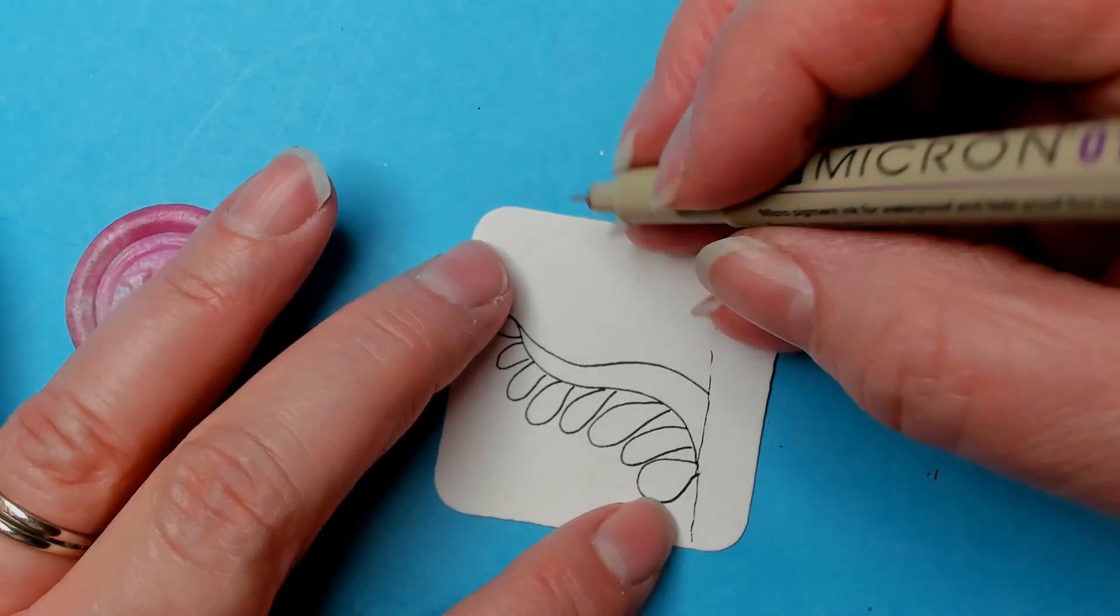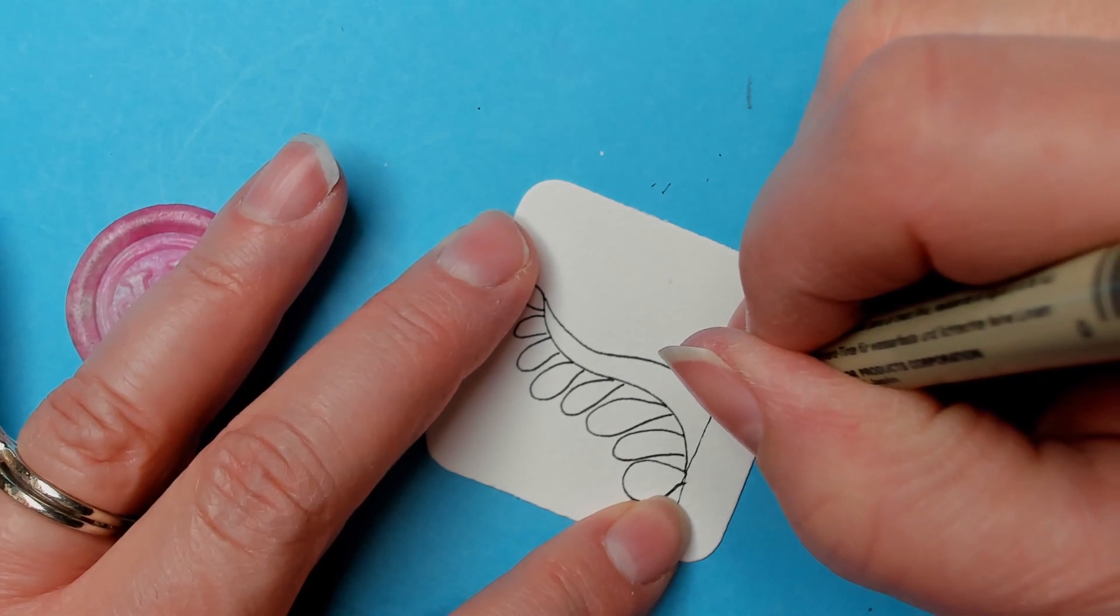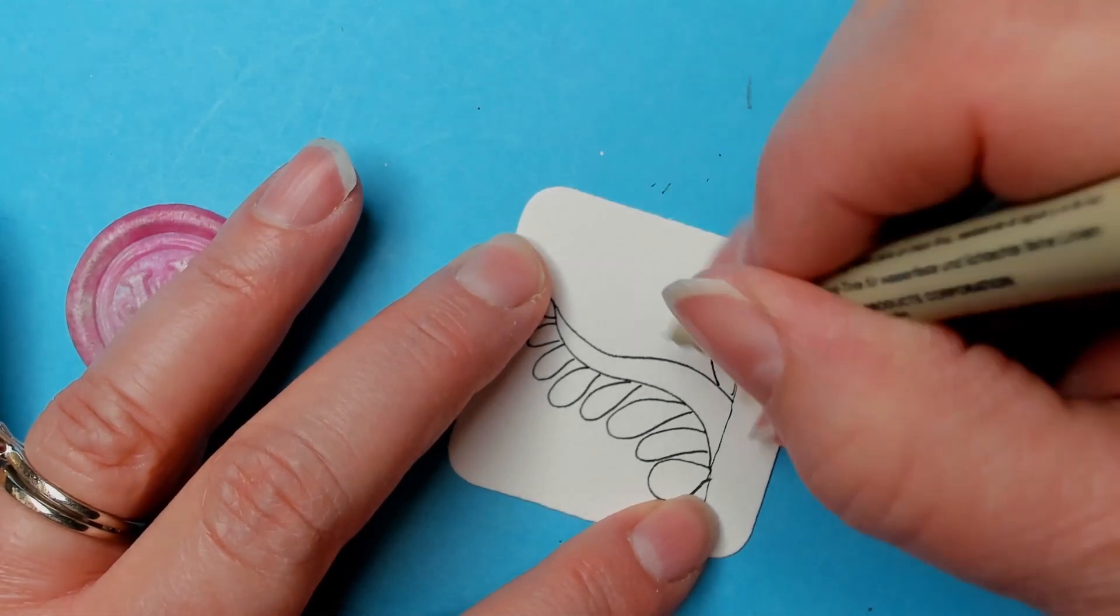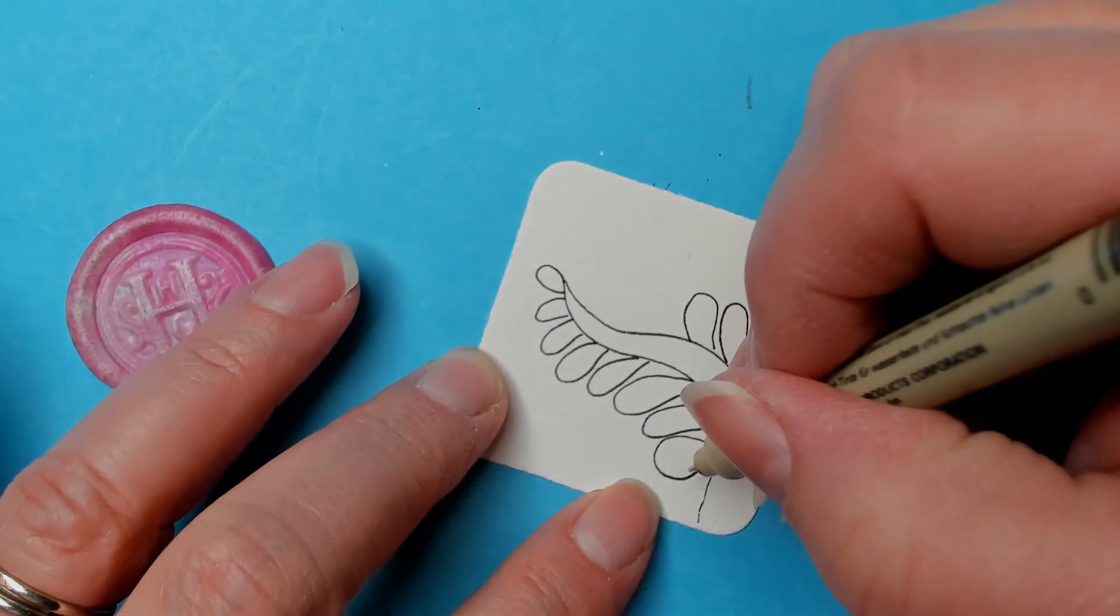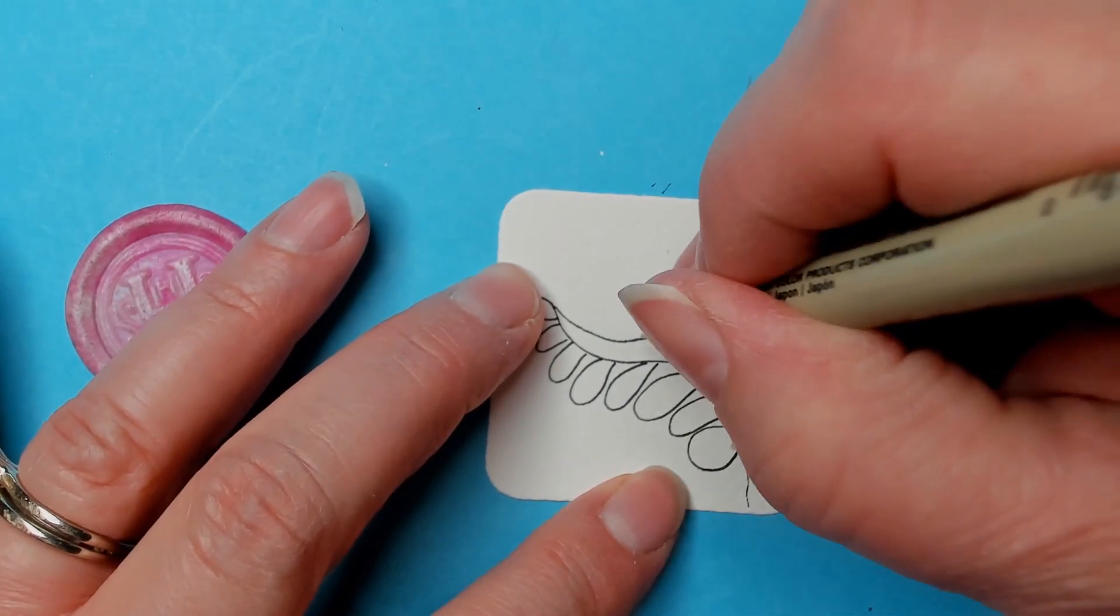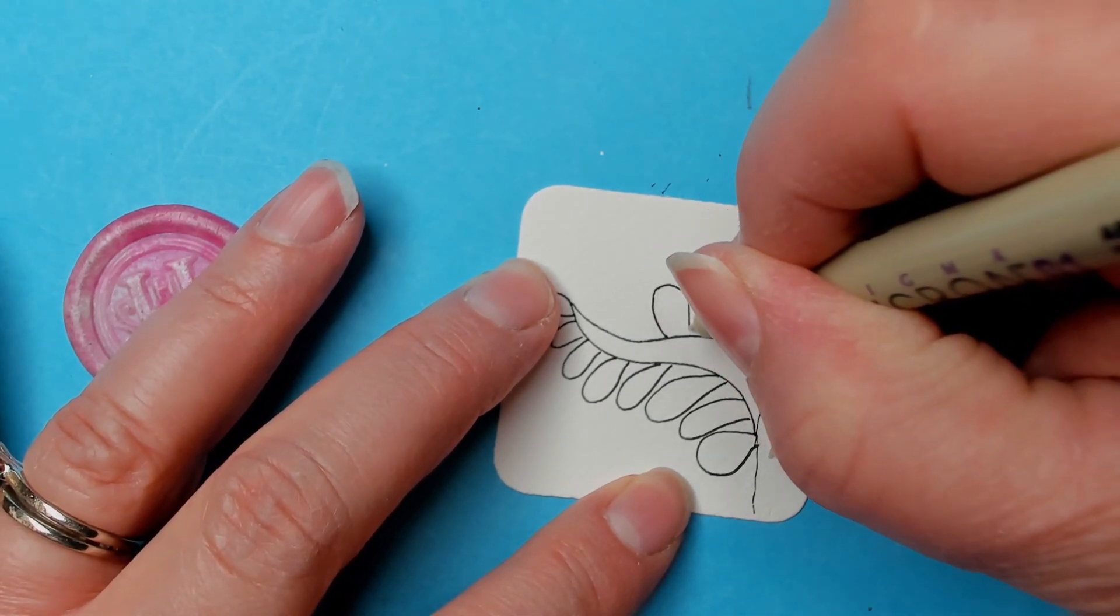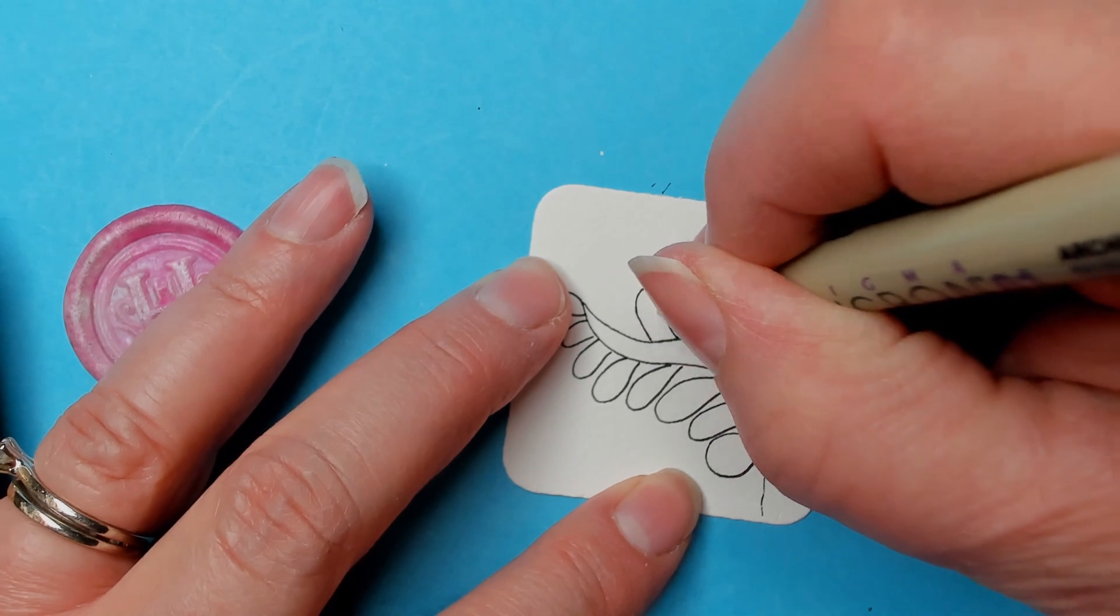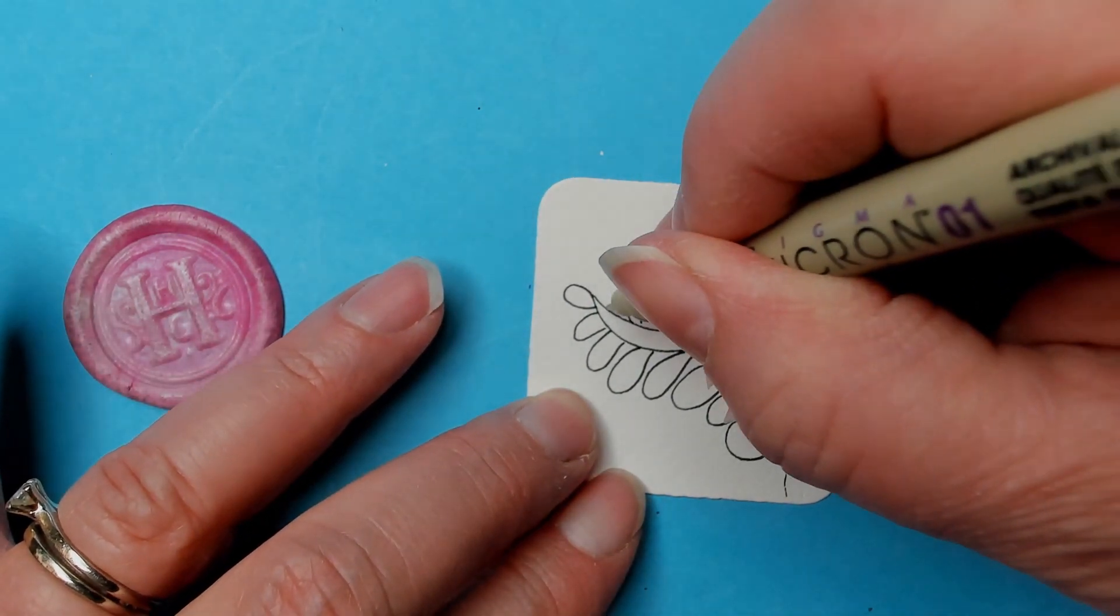And then on the other side, starting from the base, like so. And you want to leave them a bit wide at the end, because we're going to put a big orb in there.